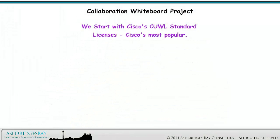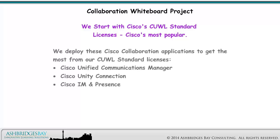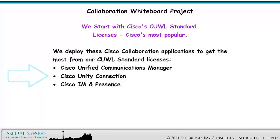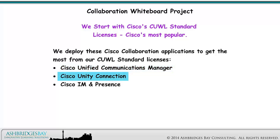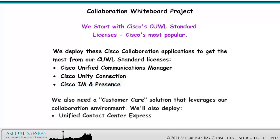We start with Cisco's COOP standard licenses, Cisco's most popular. We deploy these Cisco Collaboration applications to get the most from our COOP standard licenses: Cisco Unified Communications Manager, Cisco Unity Connection, and Cisco IM and Presence. We also need a customer care solution and will deploy Unified Contact Center Express.